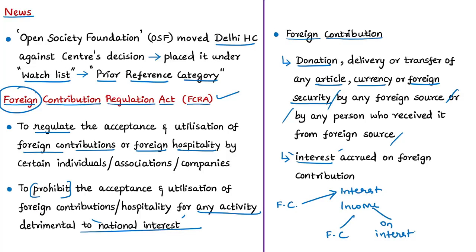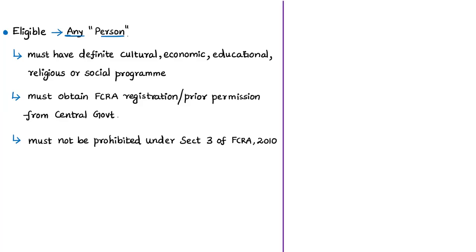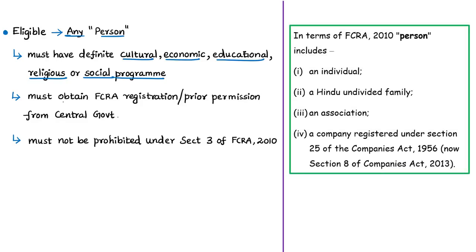Any individual, association, or company can receive foreign contribution, subject to conditions. First, they must have a specific program aiming to achieve cultural, economic, educational, religious, or social purposes. Second, they must obtain FCRA registration or FCRA prior permission from the central government. Third, the person must not be prohibited under Section 3 of the FCRA Act of 2010, which prohibits election candidates, judges, government servants, members of any legislature, political parties, etc., from receiving foreign contribution.